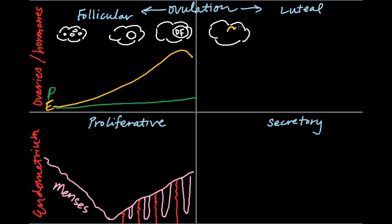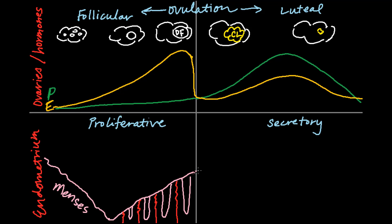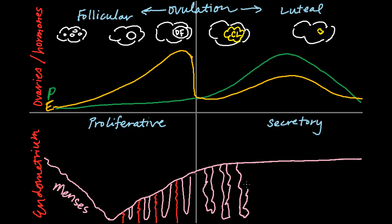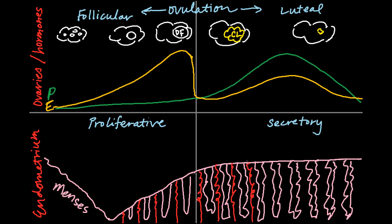Following ovulation, the corpus luteum forms in the ovary and produces progesterone, with maximal levels at the mid-luteal phase. The corpus luteum also produces a moderate amount of estradiol. If pregnancy does not occur, the corpus luteum regresses and there is a significant drop in both progesterone and estradiol. During the rise in progesterone, the endometrium transforms into secretory tissue in preparation for possible implantation. The glands become increasingly tortuous and may have a greater than 50% glands-to-stroma ratio. The spiral arteries that feed the endometrium increase in number and coiling.